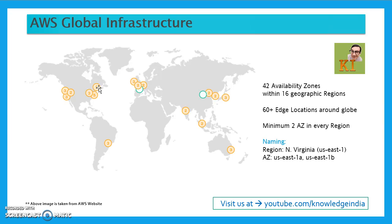In any region there would not be only one data center — in any region there would be a minimum of two data centers. What is an availability zone? Within a region, data centers are clustered or isolated from each other. An availability zone represents a data center or a cluster of data centers at one place, and two availability zones within a region are physically isolated from each other.